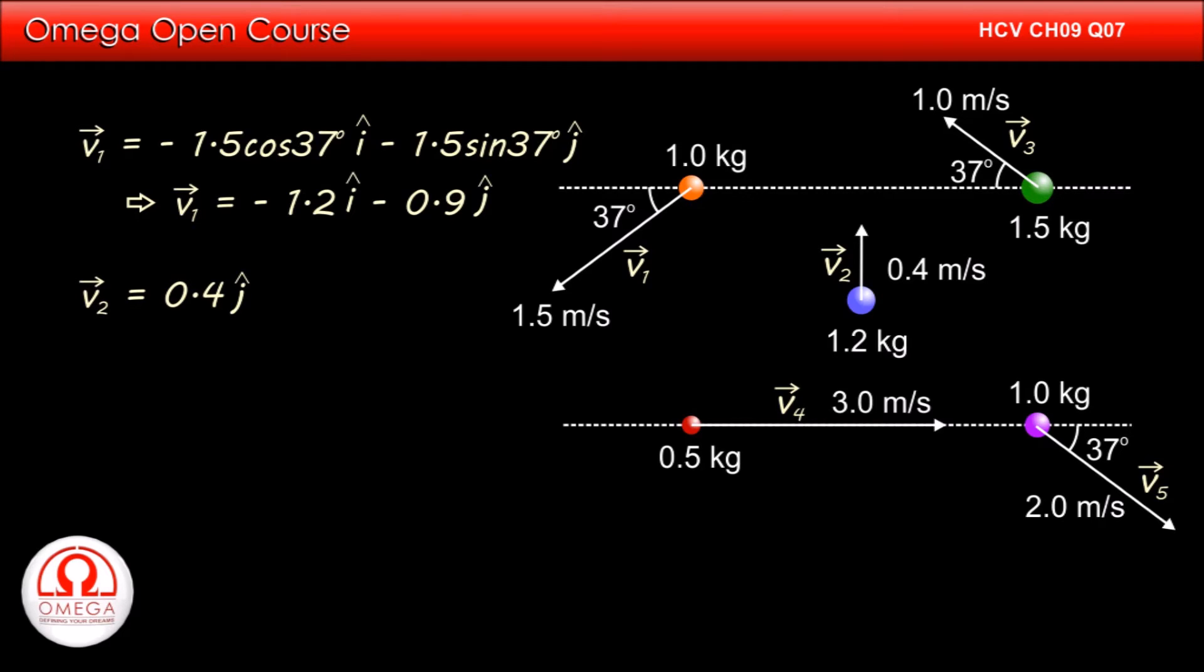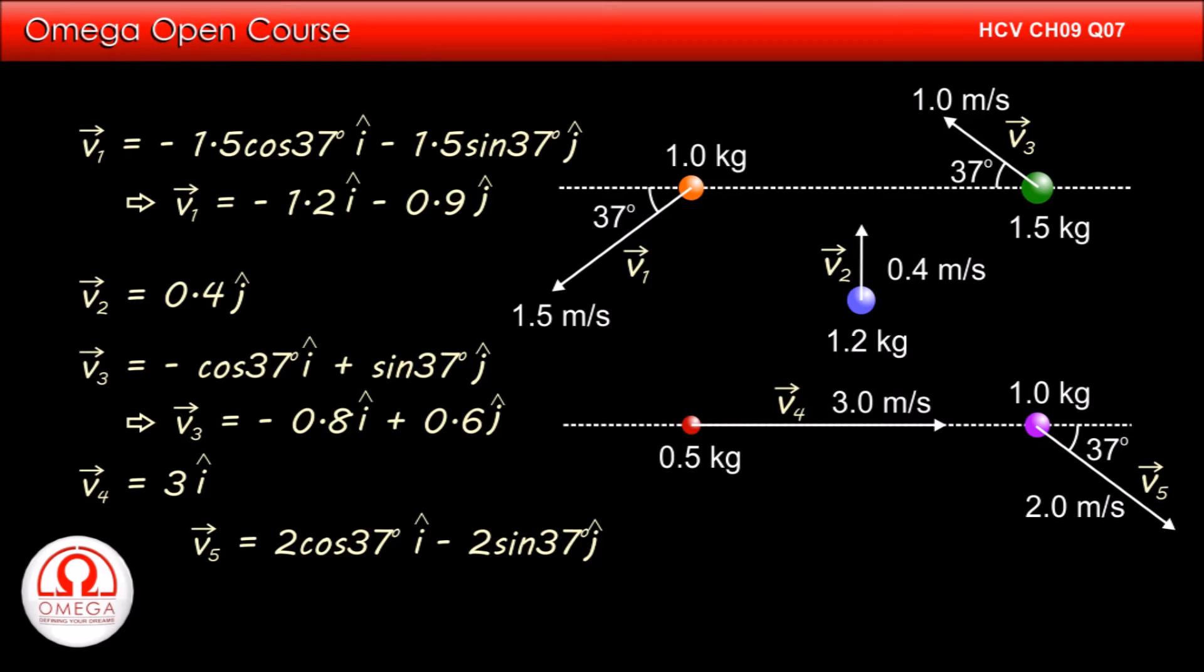Vector v2 is 0.4 j cap. Vector v3 is minus cos 37 degree i cap plus sin 37 degree j cap. Vector v4 is equal to minus 0.6 j cap. Vector v4 is equal to 3 i cap and vector v5 is 2 cos 37 degree i cap minus 2 sin 37 degree j cap. That is 1.6 i cap minus 1.3 j cap.